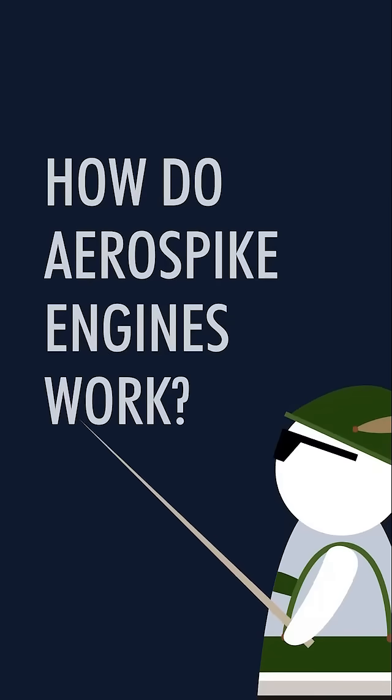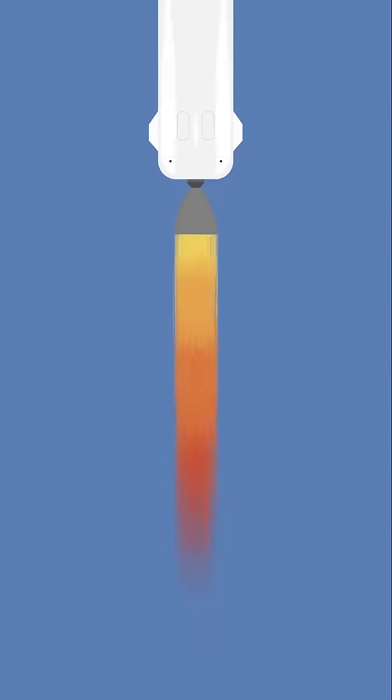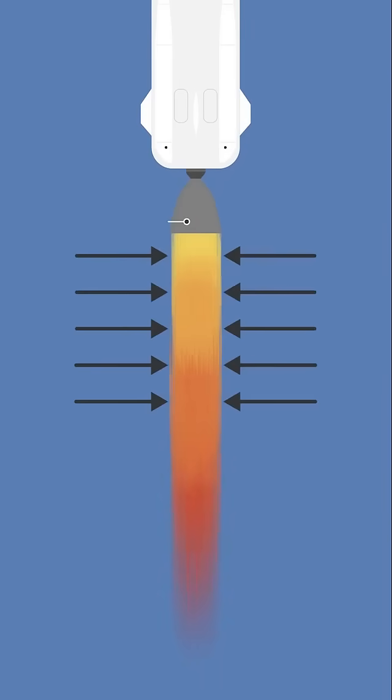How do aerospike engines work? At sea level the high ambient pressure pushes on the exhaust gas of a conventional rocket engine, keeping it in a straight line.